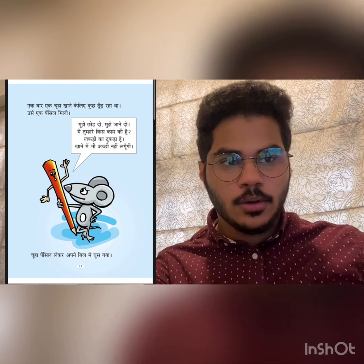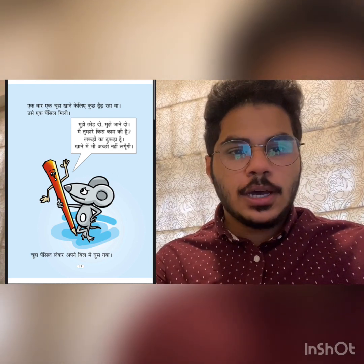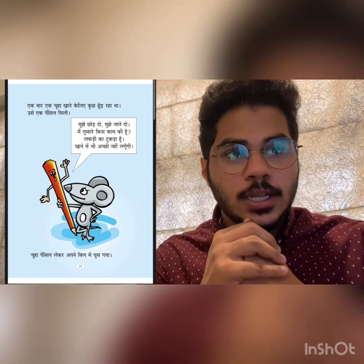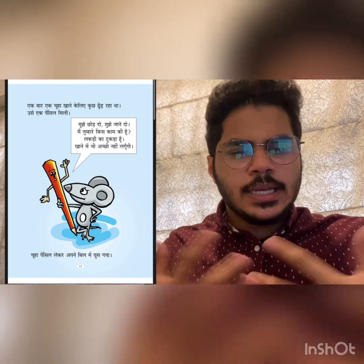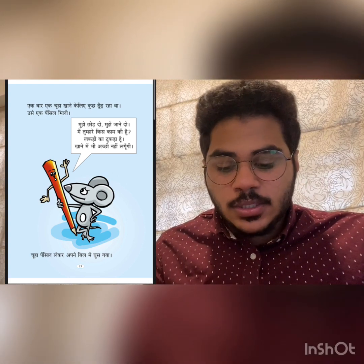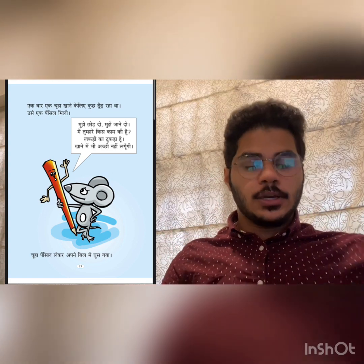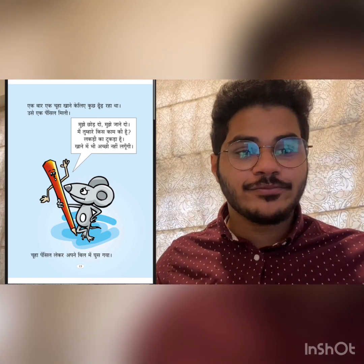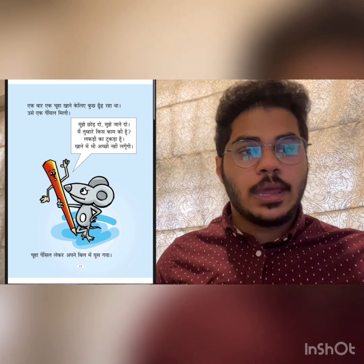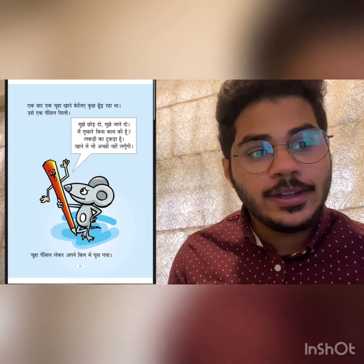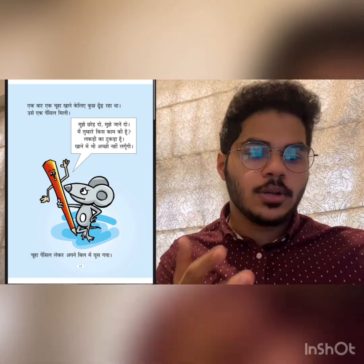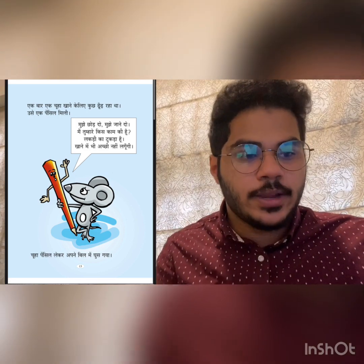So to summarize page one: once a rat was searching for food — 'chuha khane ke liye khoj raha tha' — and found a pencil. The pencil said: 'Mujhe chod do, mujhe jane do' — please leave me, please let me go. I am of no use to you at all; I am just a piece of wood, and I won't even taste good. At the end of the page there is one more line: 'Chuha pencil lekar apne bil mein ghus gaya' — the rat took the pencil and hid inside his hole. 'Bil' means hole, and 'ghus gaya' means went inside or hid. Now we are moving on to the second page.